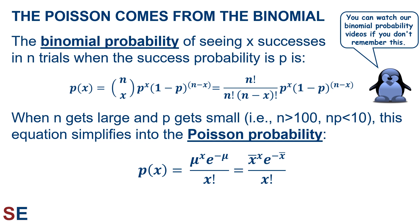The Poisson distribution comes from the binomial, and it's a special case of the binomial under certain circumstances. If you're familiar with the binomial, you'll remember that it describes the probability of seeing x successes in n trials when the success probability is p, and is given by the equation P(x) equals n choose x times the probability of success to the x power times the probability of failure to the n minus x power. If you don't remember this, you can watch our binomial probability videos on this same channel and playlist.